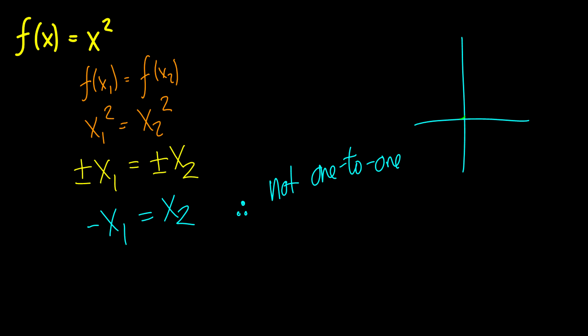We can see this in a nice graph here, the x squared function. If we take an x point here and an x point here, we see that their y values are exactly the same, even though we have different values of x. This means that the function is not one-to-one.